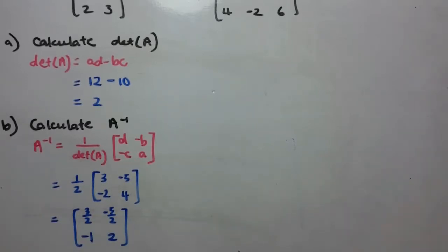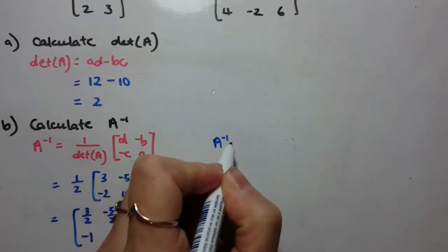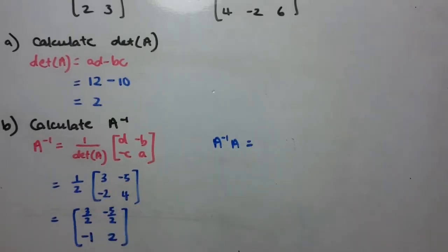So I'm just going to verify that this is correct. What I want to do is get A inverse, multiply that by A, and I'm hopefully going to get the identity matrix at the end.